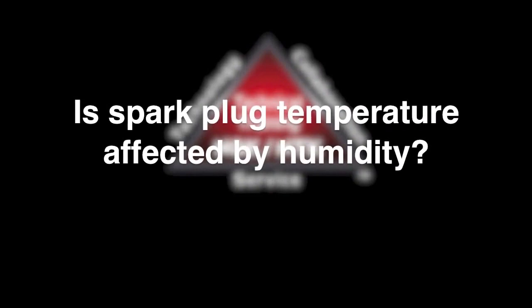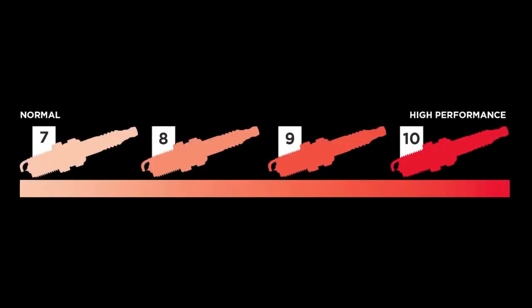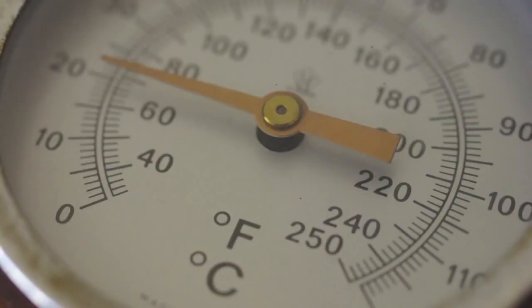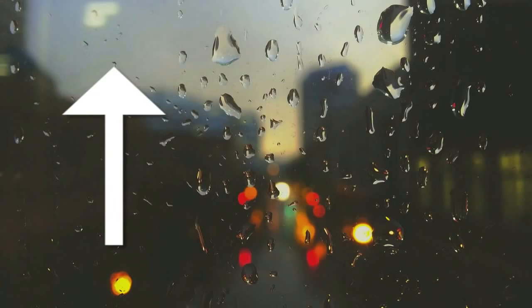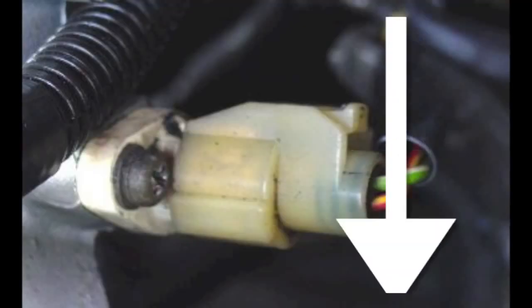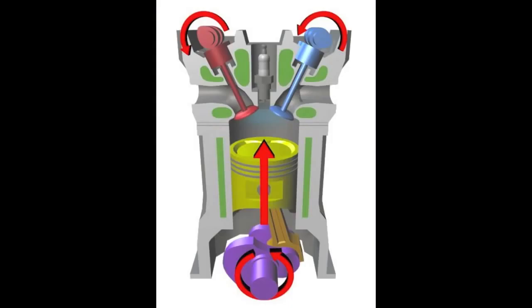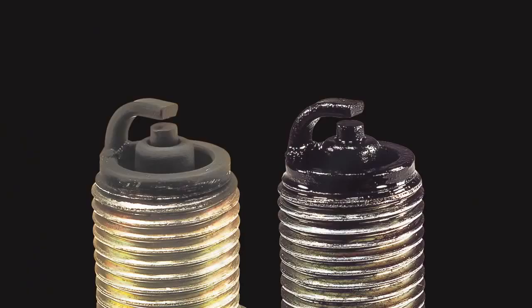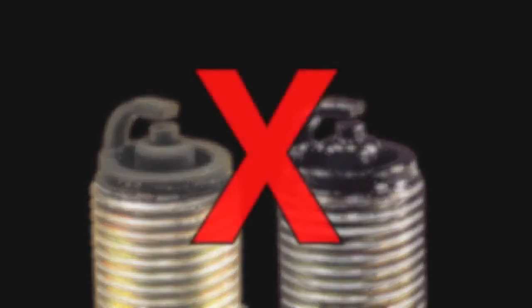Is the spark plug's temperature affected by humidity? A spark plug's operating temperature is affected by humidity and ambient air temperature. As humidity increases or ambient air temperature entering the engine decreases, lower combustion pressure and lower cylinder temperatures are present. It is important to keep the spark plug operating at the proper temperature, keeping the insulator clean of carbon and fuel fouling.